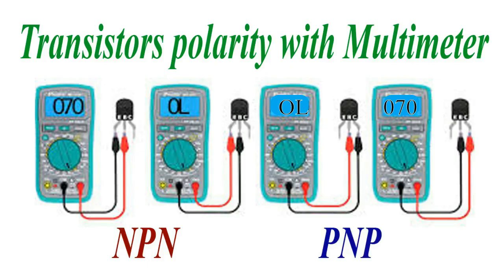For PNP, the black or negative probe should be placed on the base. If you get a reading when you touch the red or positive probe to both the collector and emitter, it is a PNP transistor.